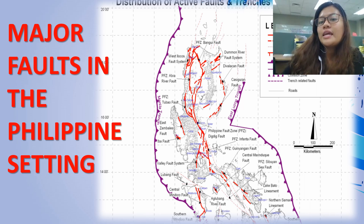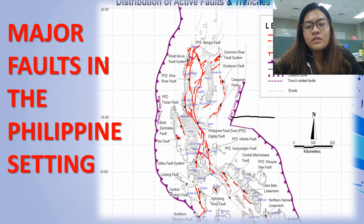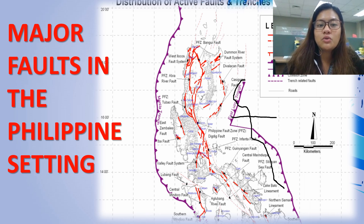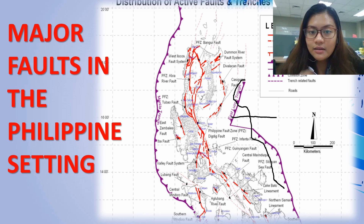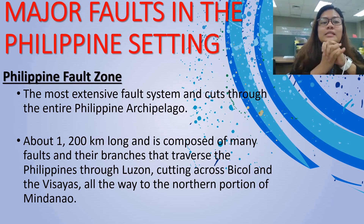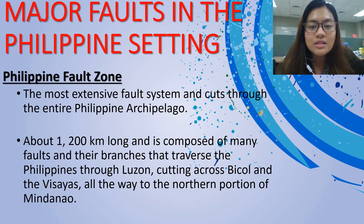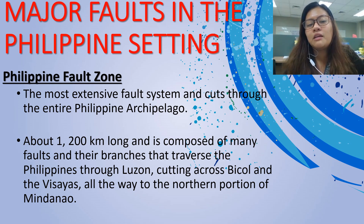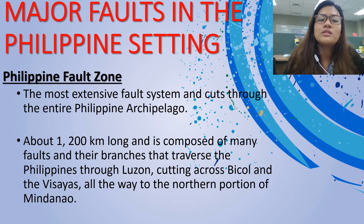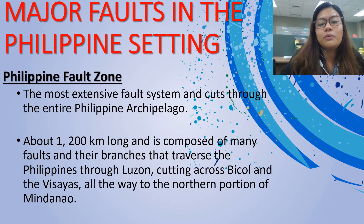We have the major fault lines in the Philippines. The violet form is a trench — the deepest part of the ocean. We have two trenches: the Manila Trench and the East Luzon Trough. Major faults in the Philippine setting include the Philippine Fault Zone, the most extensive fault system cutting through the entire Philippine archipelago. From Luzon to Mindanao, we all have a connected left-lateral strike-slip fault zone, about 1,000 to 1,200 kilometers long, composed of many faults and branches traversing the Philippines through Luzon, cutting across Bicol and the Visayas, all the way to the northern portion of Mindanao.